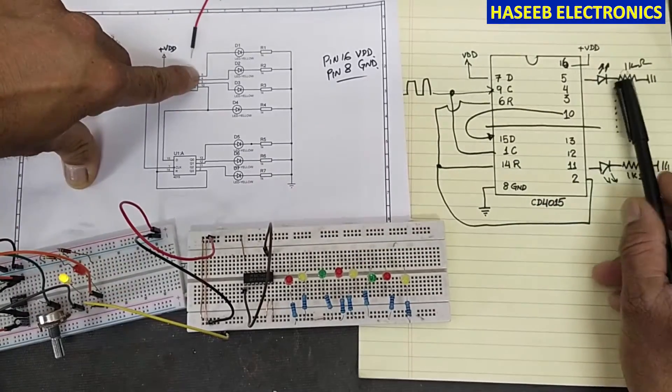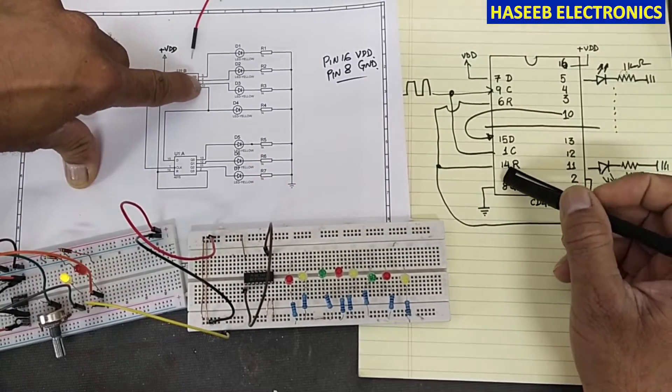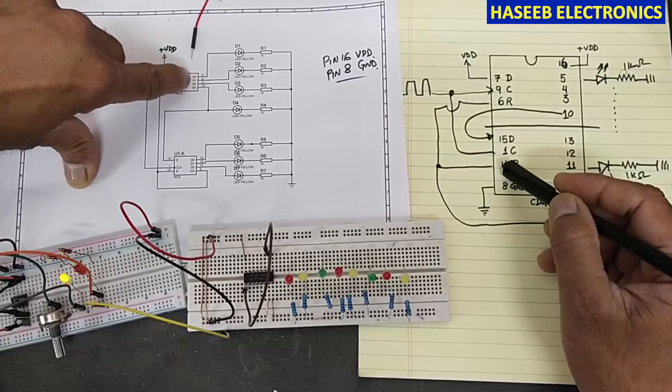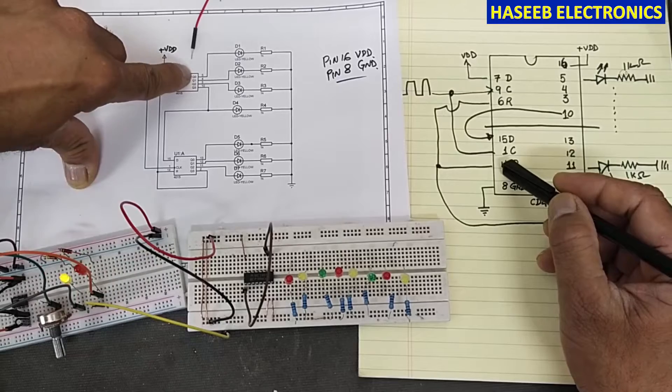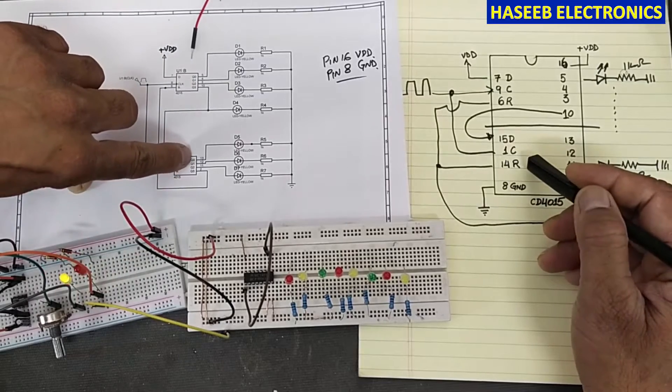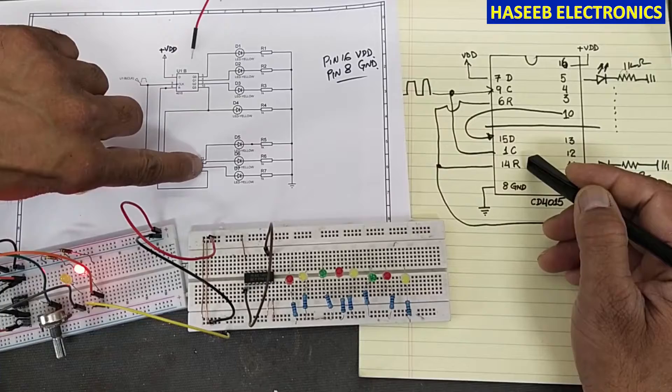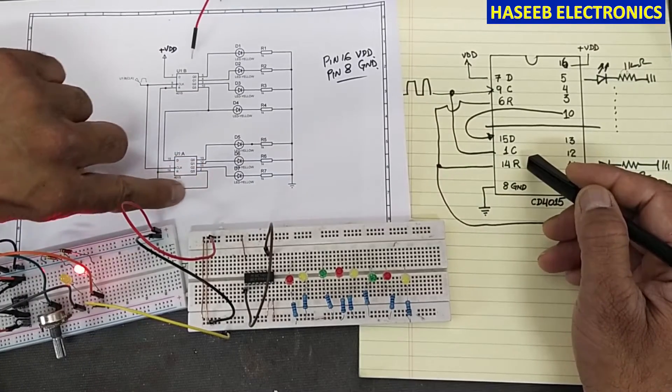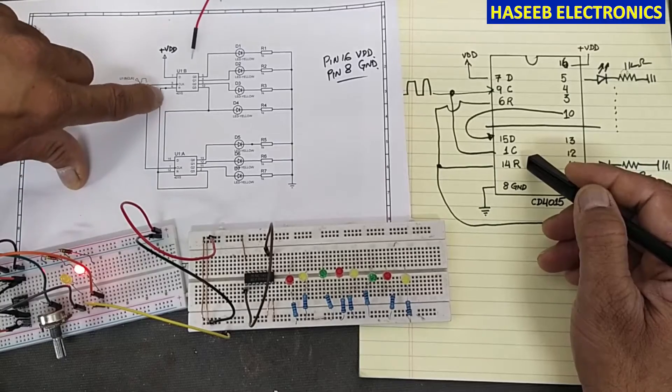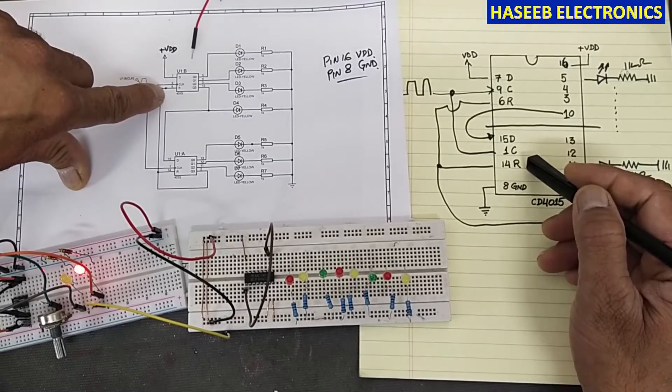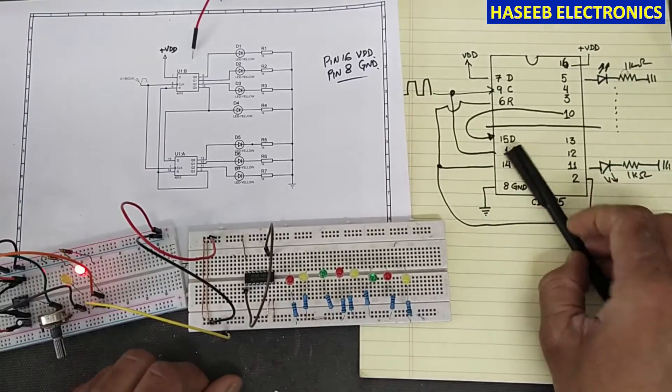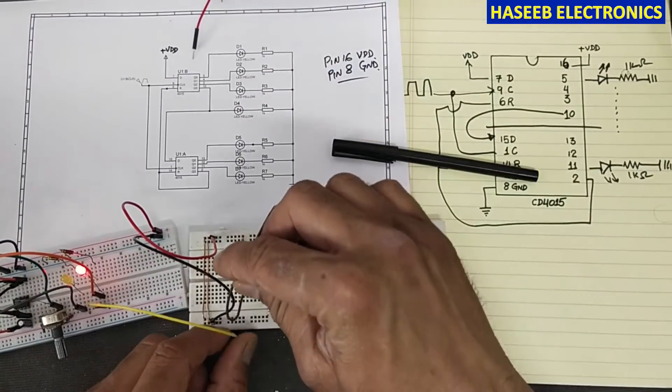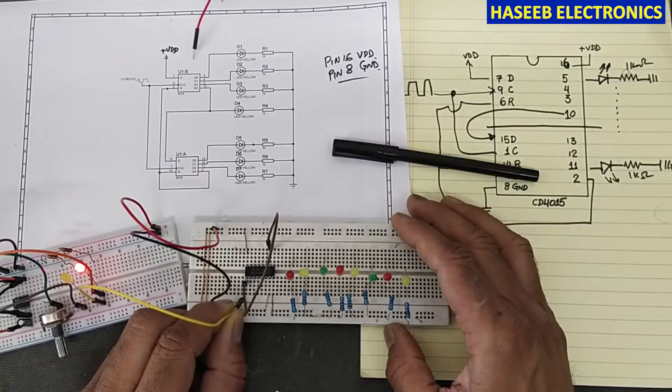Pin 5 is the first output, pin 4 is second, pin 3, pin 10. So it is Q0, Q1, Q2, Q3 from the first stage. Then second stage: Q0, Q1, Q2, Q3 are pins 13, 12, 11, and 2. Pin 2 is the last output, so 2 will be connected to 14, and pin 6 to reset this IC. I made a jumper between pin 9 and 1, so we will connect the clock signal at this pin.